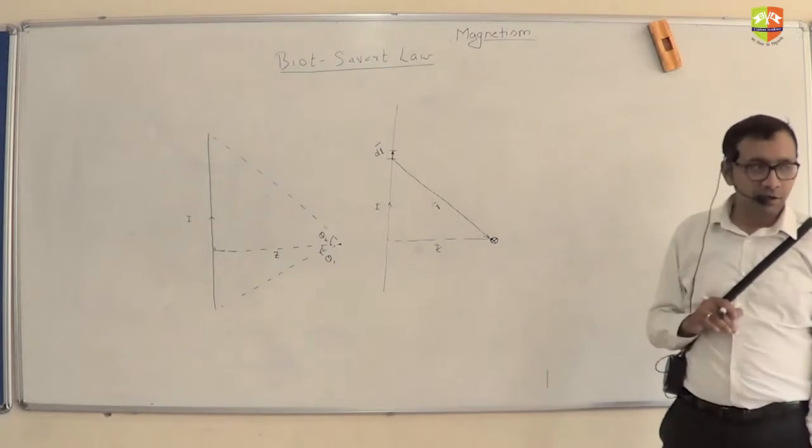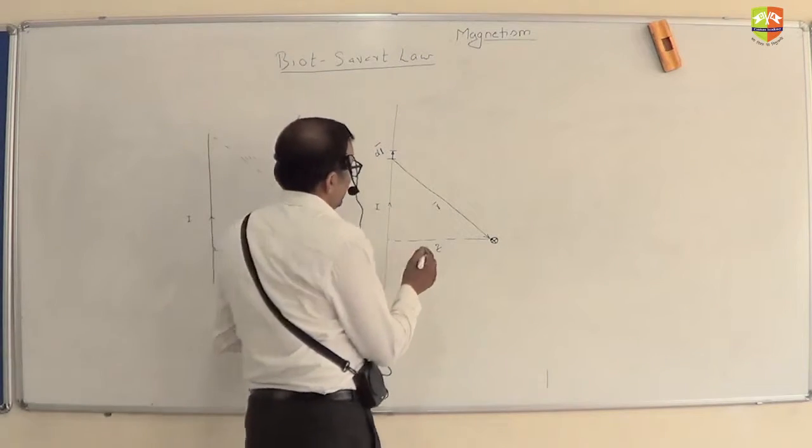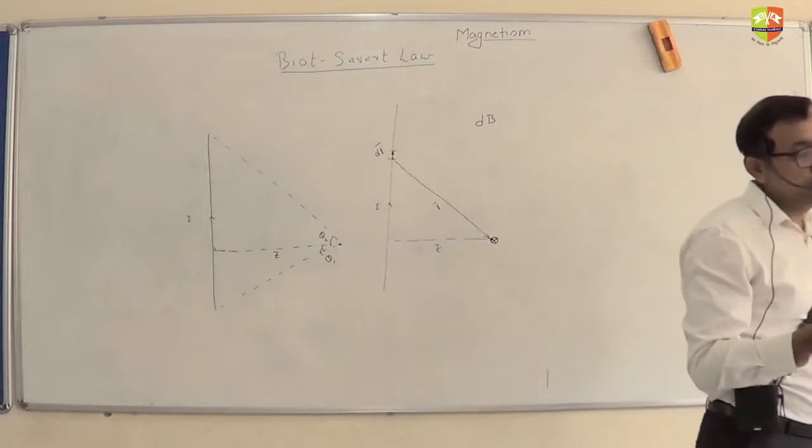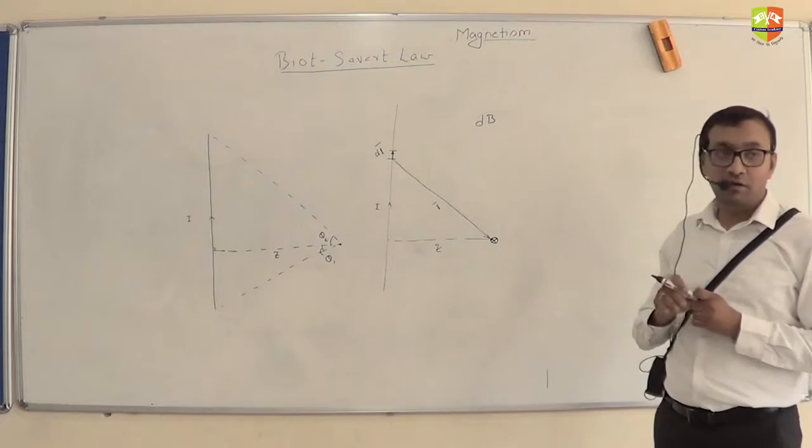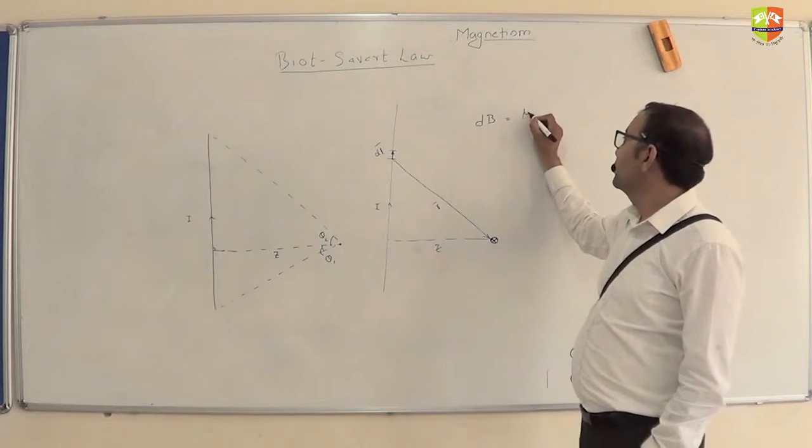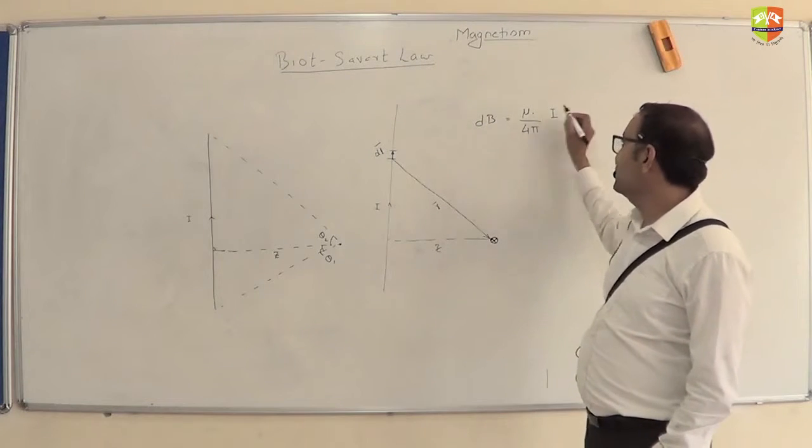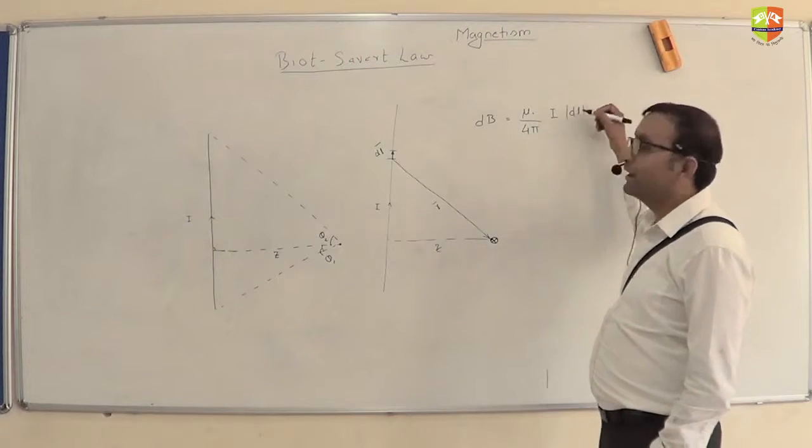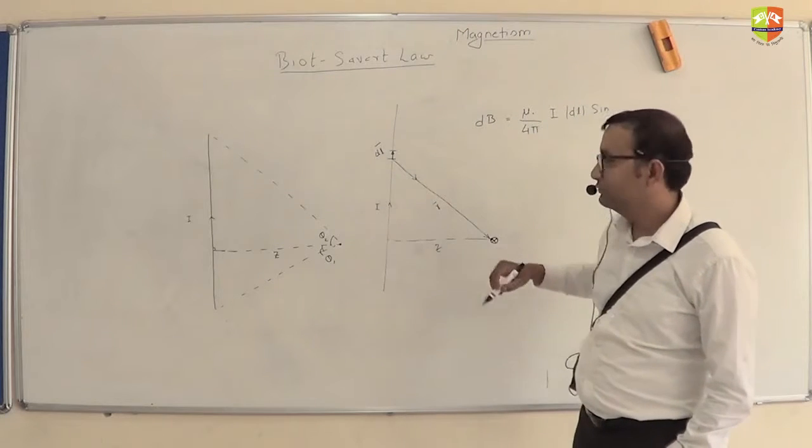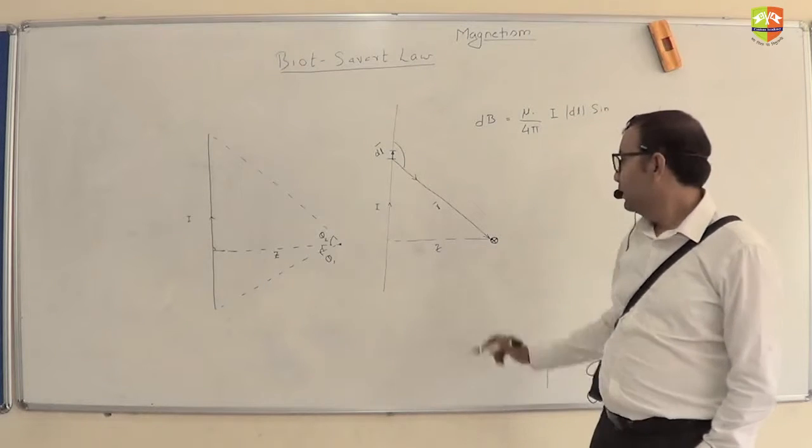Can you try to do it yourself? I am not looking for that you should get it correct, at least attempt it. Then when I tell you what is correct, you will be able to correlate and see where your conceptual credibility is. So dB is mu0 by 4 pi. What is the expression? This angle, how much is that?